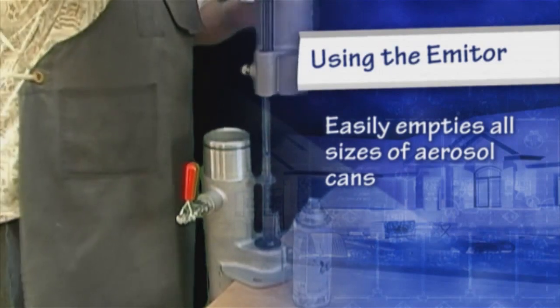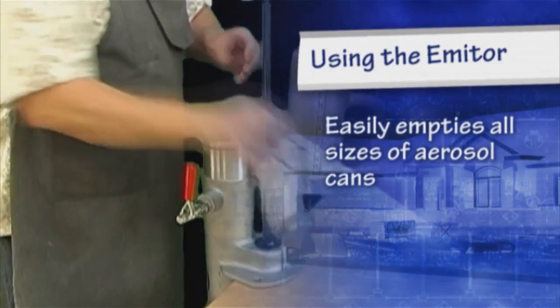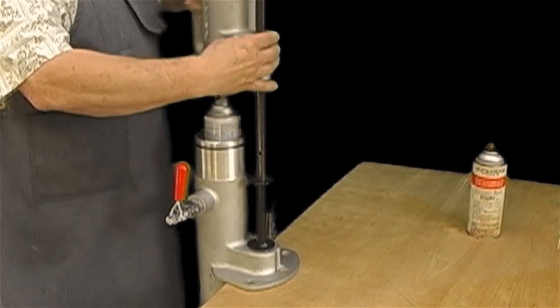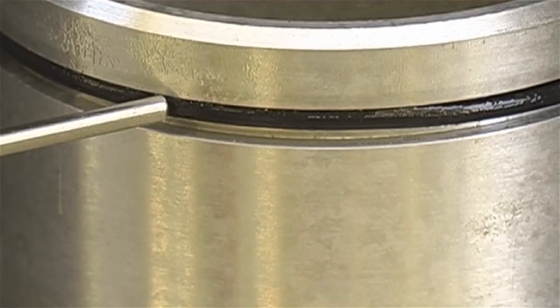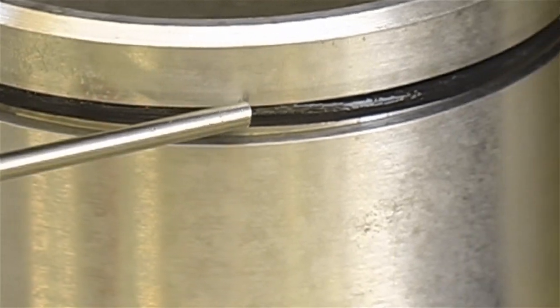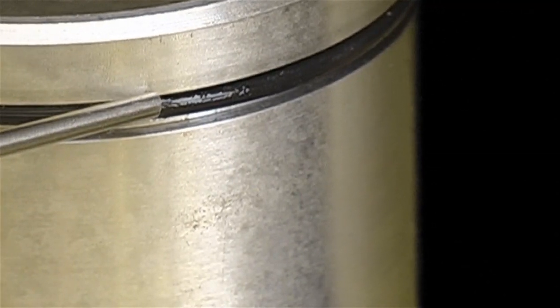Disengage the locking device, lift the cover, and insert an aerosol can into the lower chamber. Lower the cover and the locking device will automatically secure the two chambers. The O-ring seal between the two units prevents the leakage of liquids or propellants.